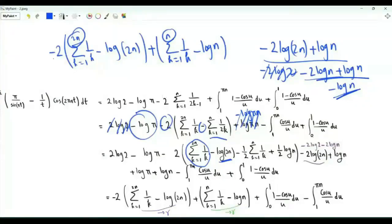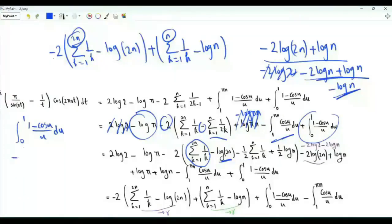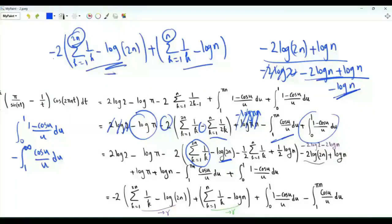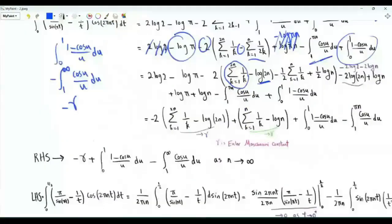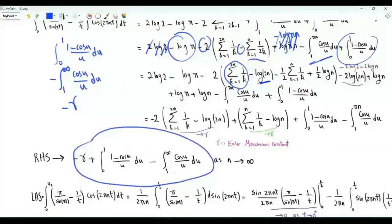When we take the limit of the right-hand side as n tends to infinity, we end up with this integral, which does not depend on n. We get this integral minus the integral from one to infinity of cos u over u. This difference tends to the Euler-Mascheroni constant γ as n tends to infinity. Our result has minus γ.